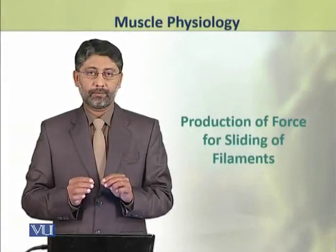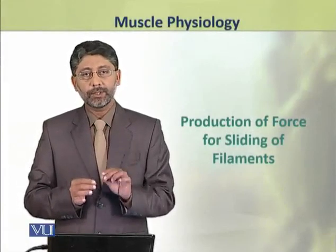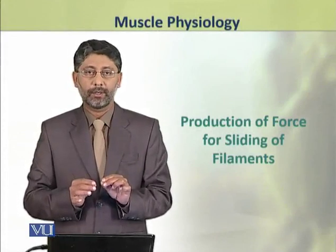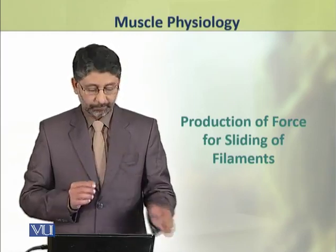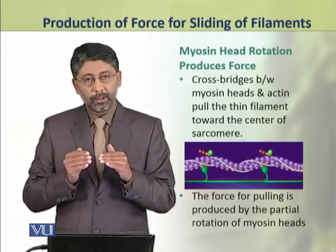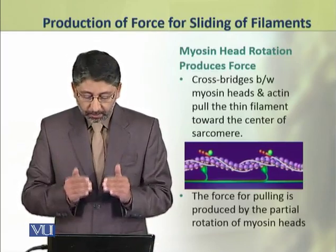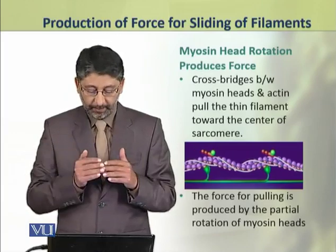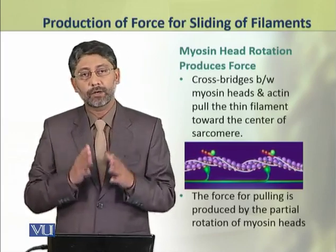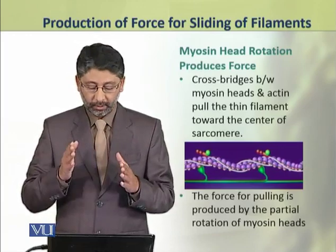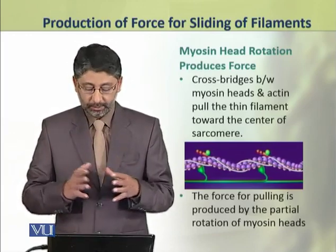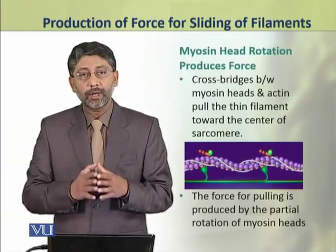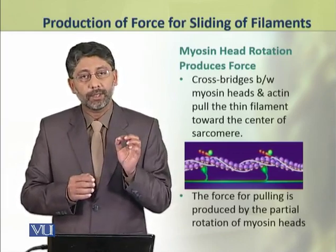In this topic we shall discuss the production of force required for sliding of filaments. The cross bridges between myosin head and actin pull the thin filaments towards the center of the sarcomere. The force for this pulling is produced because of partial rotation of the myosin head.